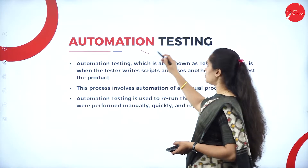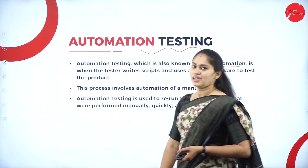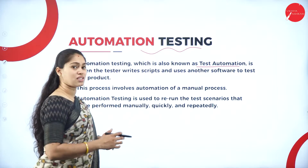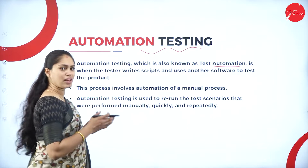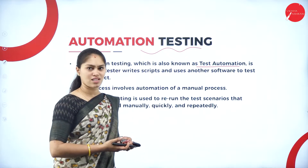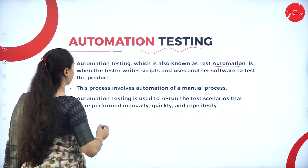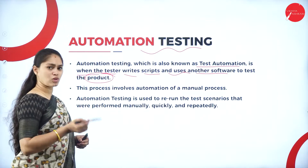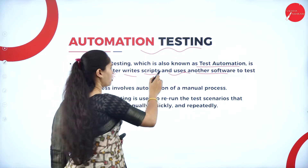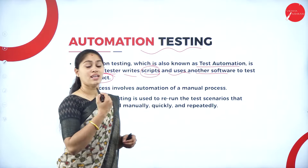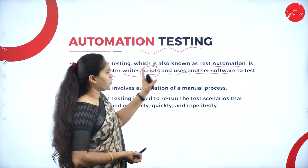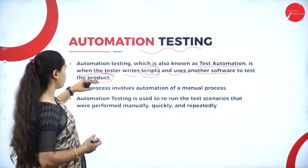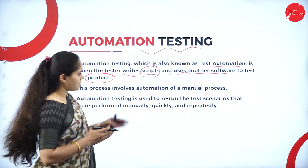Opposite to manual testing, we have automation testing, also called test automation. With the help of some automatic testing tool or scripts, testing is performed. When the tester writes the script and uses another software to test the product, checking whether the script satisfies customer requirements, that is done with the help of a software automation testing tool — this is called automation testing or test automation.